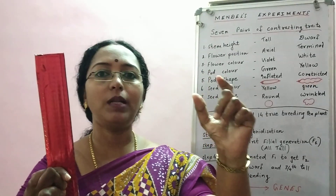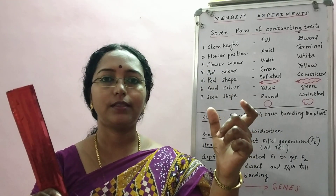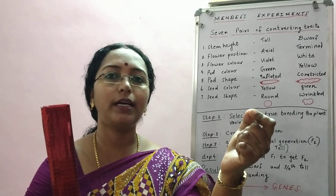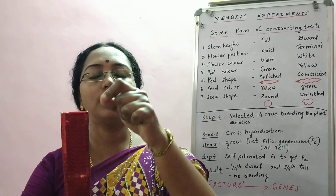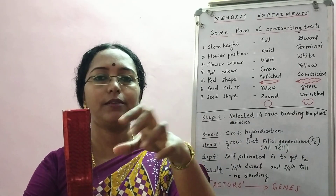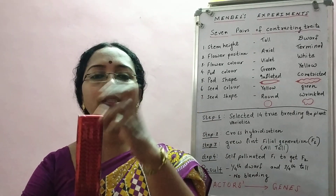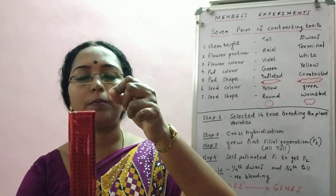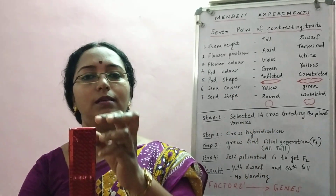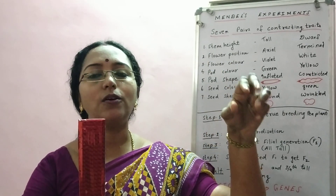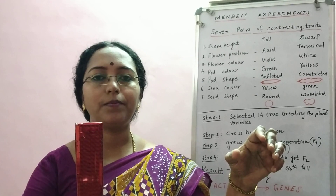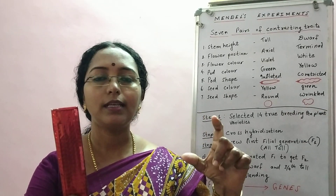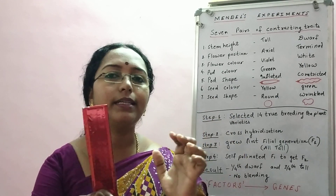From the word 'cross hybridization' you might understand it involves cross pollination. He took anthers from the dwarf plant and, after emasculation, dusted the pollen onto the stigma of the tall plant. This can also be done vice versa — pollen from the tall plant dusted onto the stigma of the dwarf plant. So step two is cross hybridization between two plants similar in six characters but differing in one.